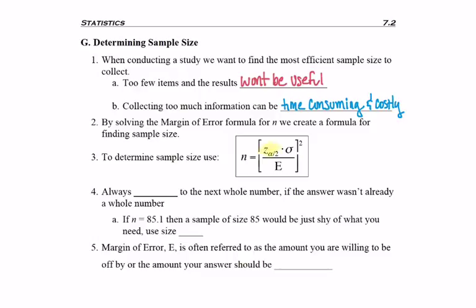What we'll do is take the critical value for the confidence interval we want, multiply it with the population standard deviation, divide by the margin of error, and then square this whole thing.